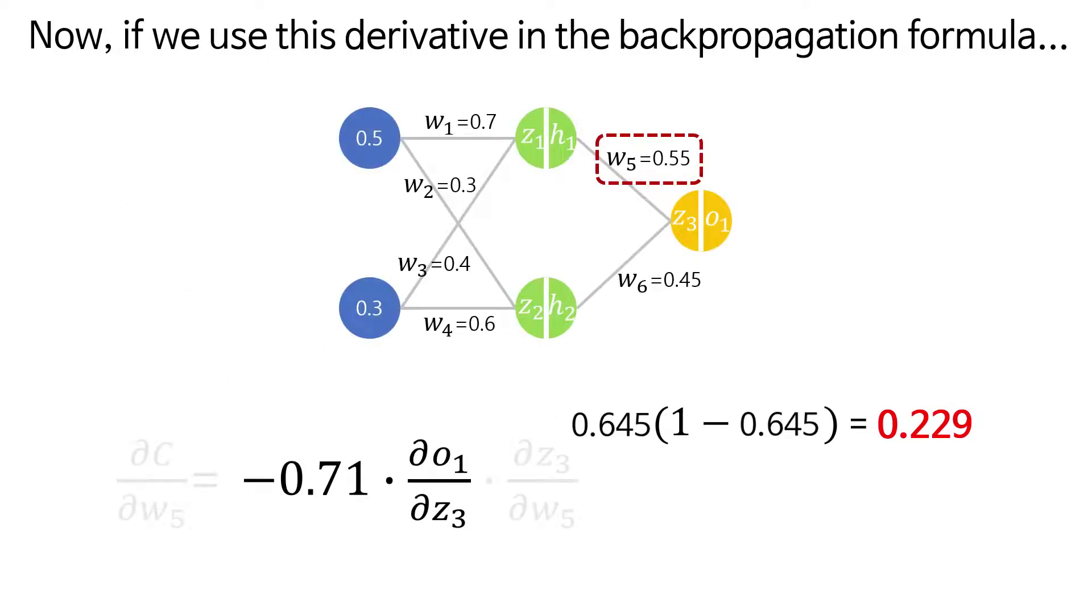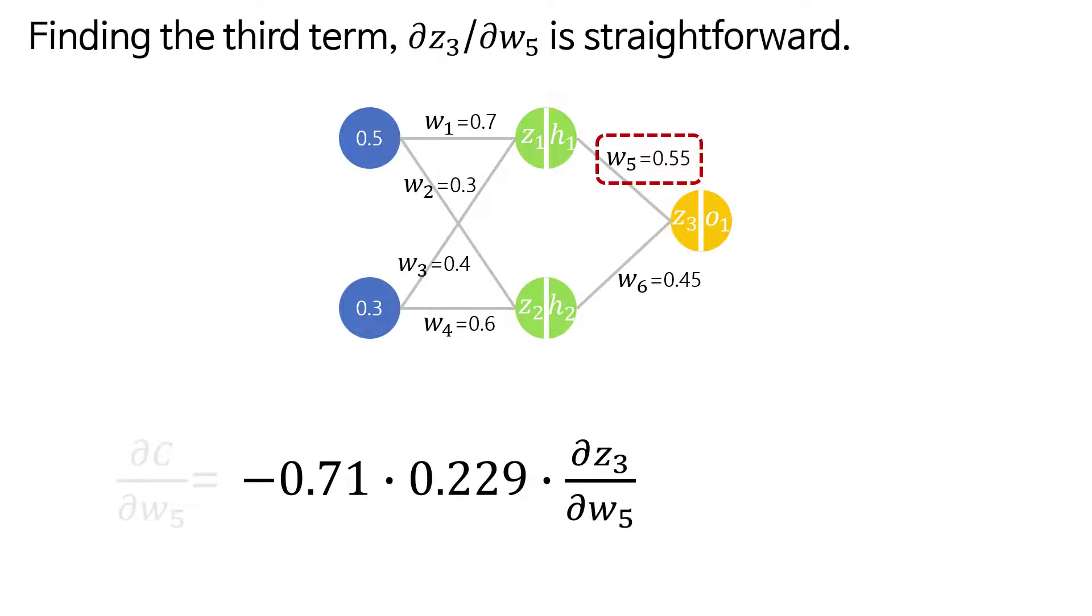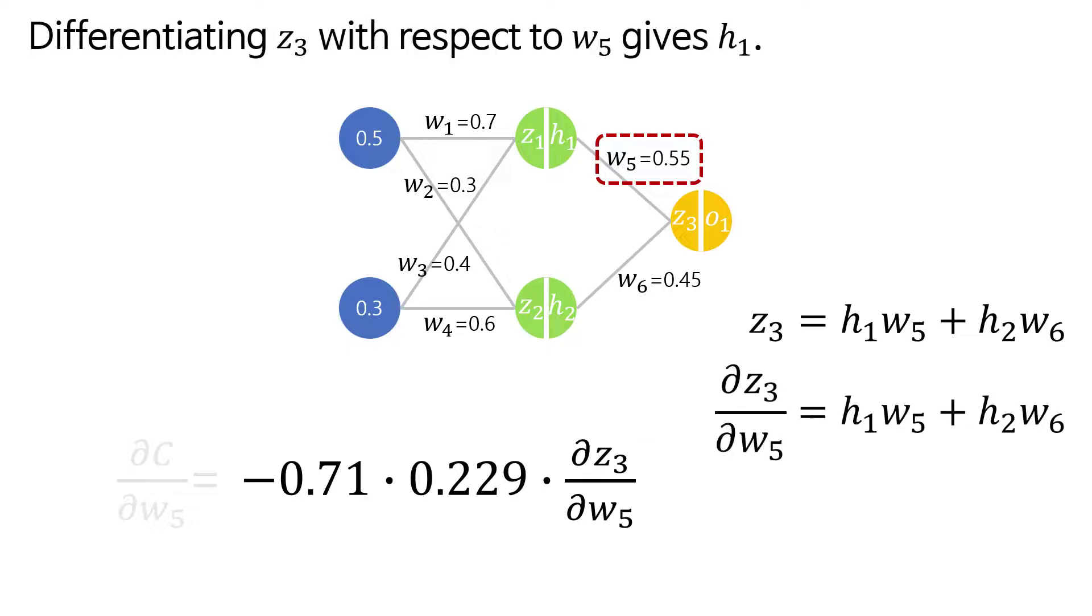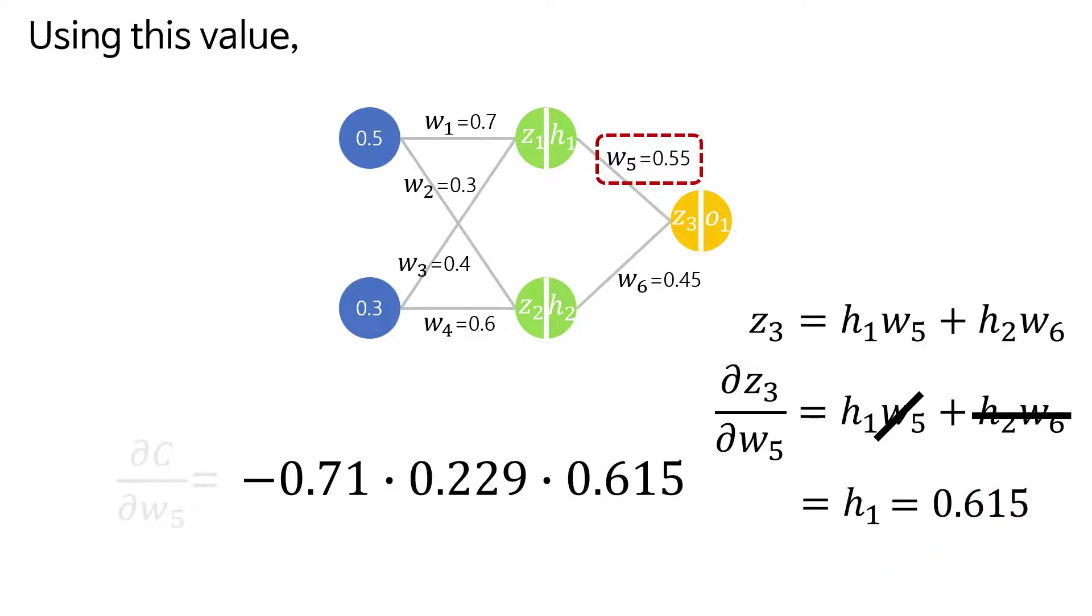Since o1 was 0.645, we can easily find the derivative for z. Now if we use this derivative in the backpropagation formula, we can find the second term. Next let's find the third term, ∂z3/∂w5. Finding the third term is straightforward. Since z3 was a sum of terms with h1 times w5 and h2 times w6, differentiating z3 with respect to w5 gives h1.